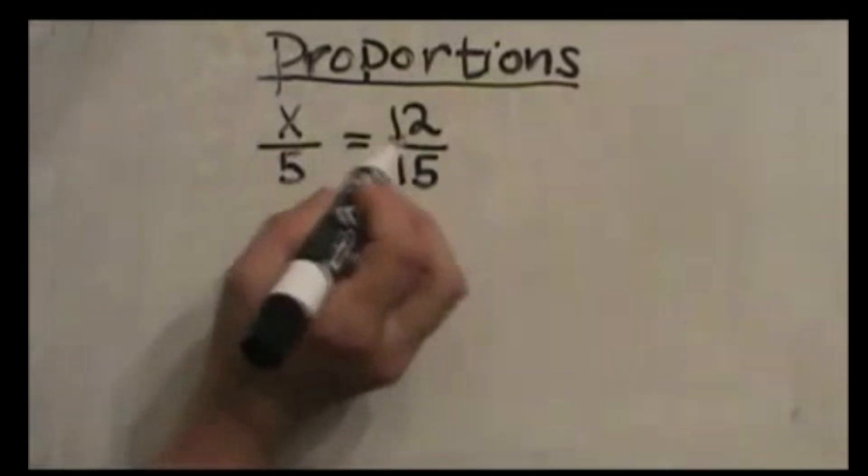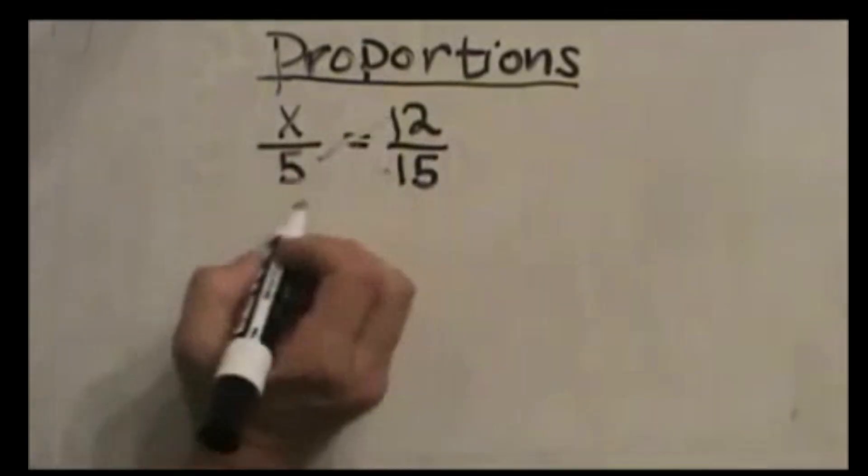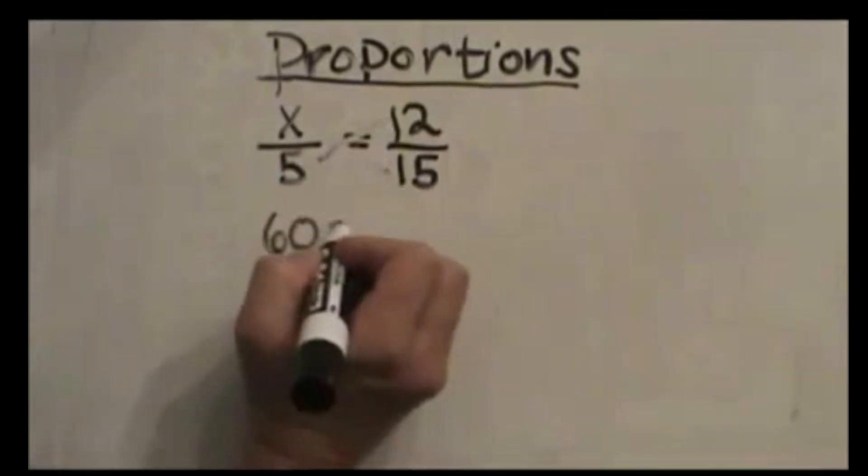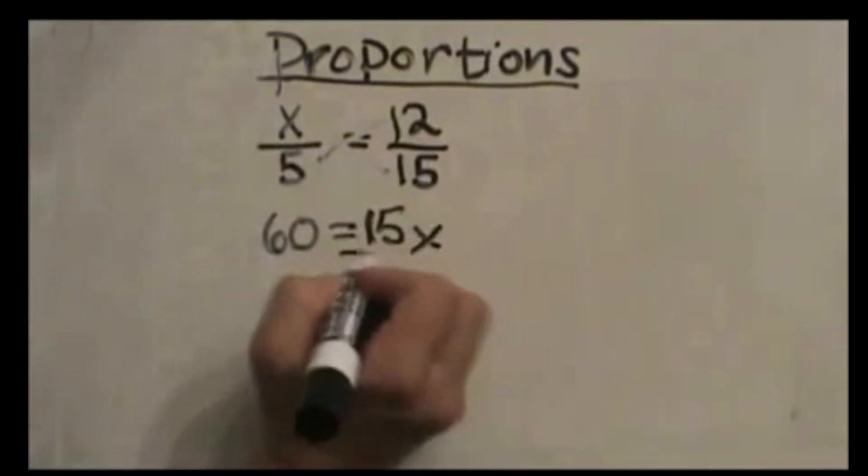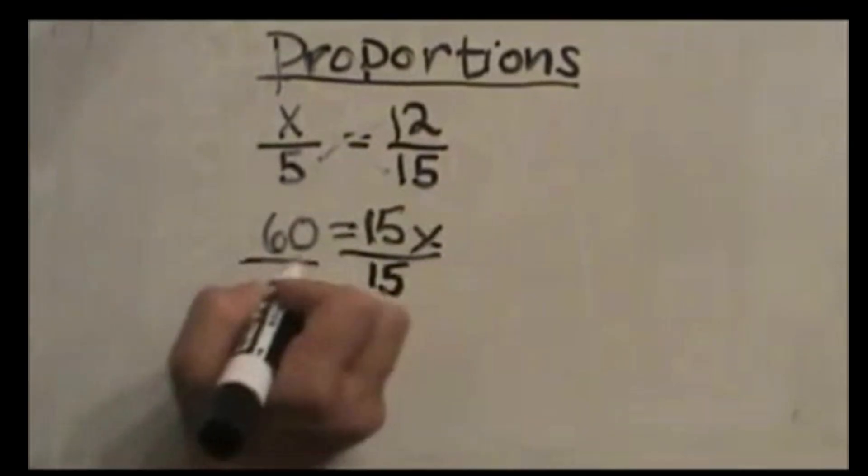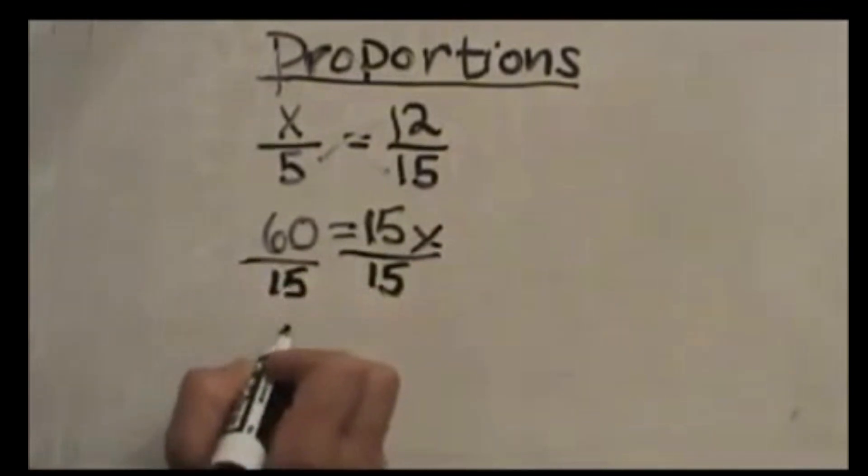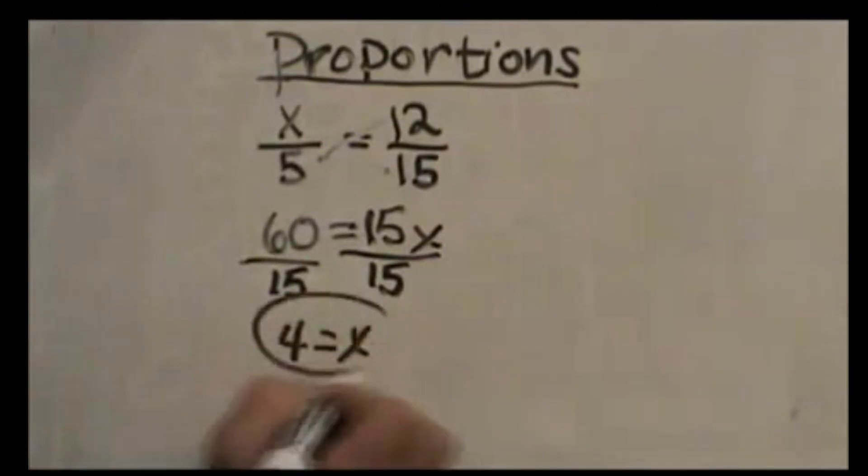The simple way to do this is to do a cross product and get 60 equals 15x, divide by 15. So x is 4. There's our answer.